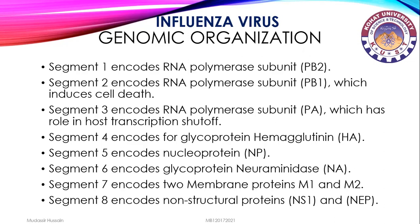Here is a brief description of each genome segment: Segment 1 encodes RNA polymerase subunit PB2. Segment 2 encodes RNA polymerase subunit PB1, which induces cell death. Segment 3 encodes RNA polymerase subunit PA, which has a role in host transcription shutoff. Segment 4 encodes glycoprotein hemagglutinin (HA), which functions in attachment. Segment 5 encodes nucleoprotein. Segment 6 encodes glycoprotein neuraminidase (NA), which functions as scissors for cutoff.